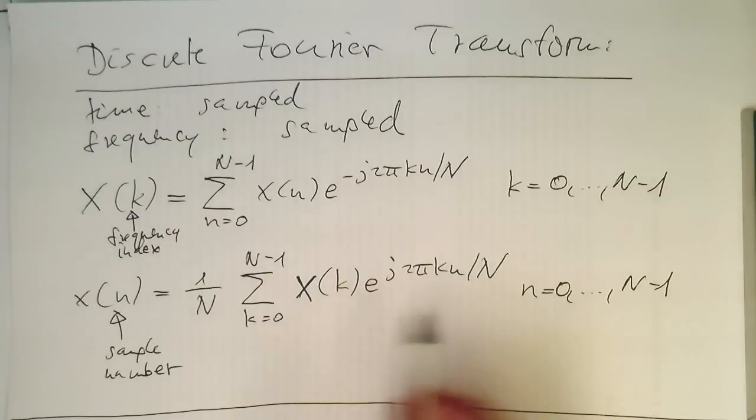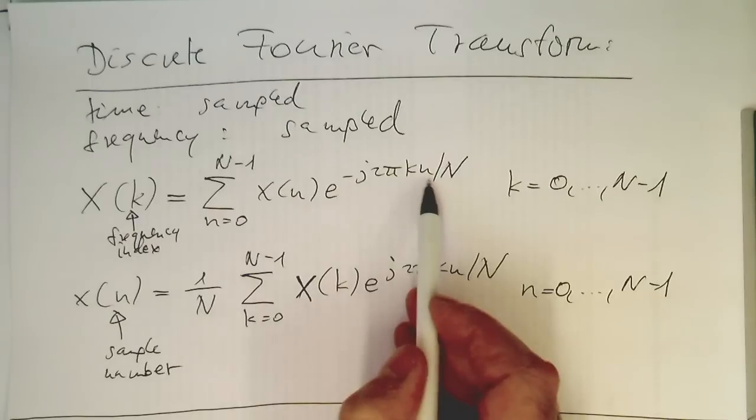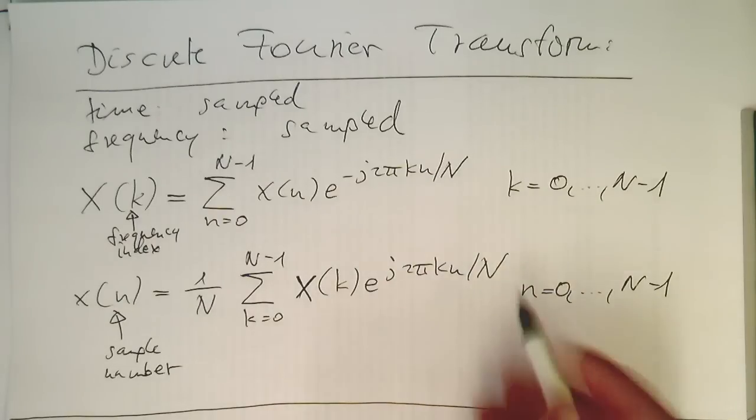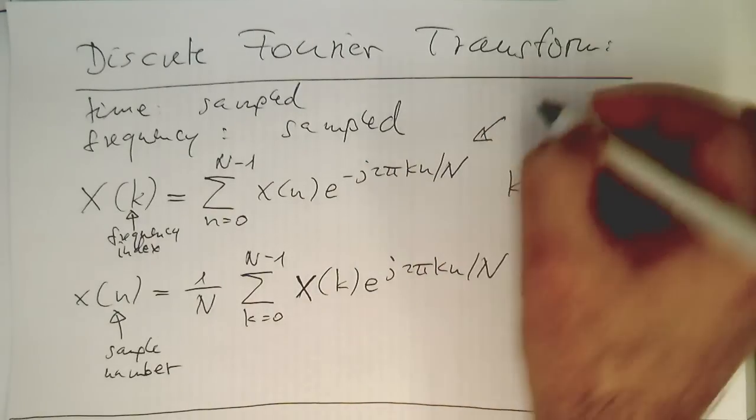So we see again, the Fourier transform works in the same way. But in this case here, we've got a ratio of kn divided by N, and capital N is the number of samples.